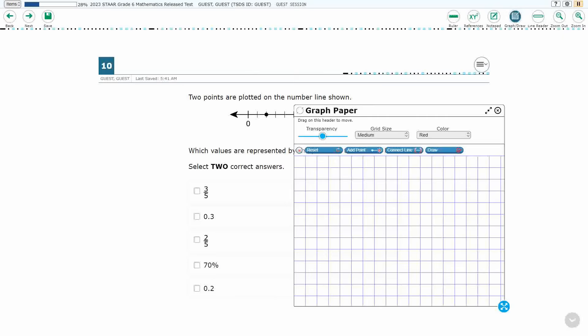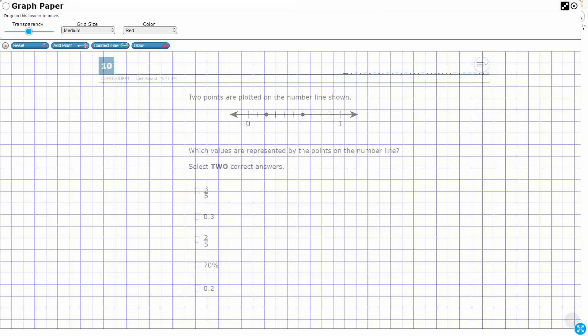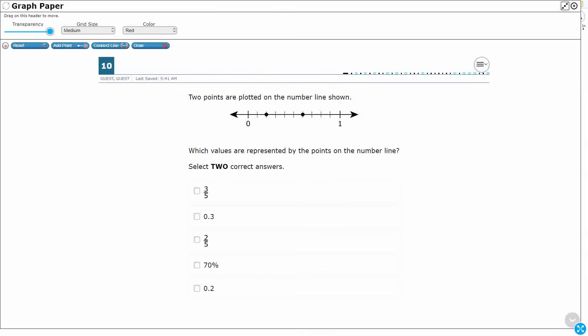So we need to find these two points here, and it looks like they're represented as—I see fractions, I see percents, and I see decimals. Okay, so fractions, decimals, and percents.